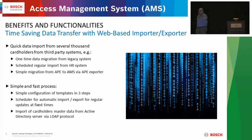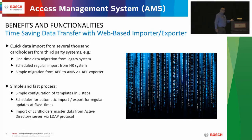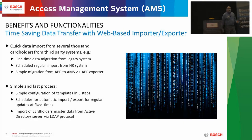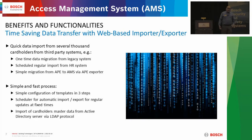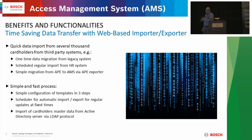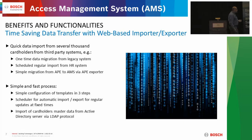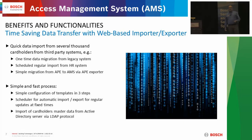The data transfer is very simplistic. You can bring in from an existing system — export out of that system their database and import it into AMS. You choose what you want to bring over, all the way down to their photos: names, addresses, whatever. You tell it what information you want to bring in, and you can import that into AMS. Very simple, very straightforward, and fast.